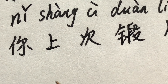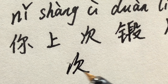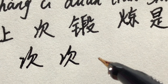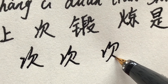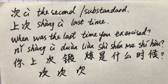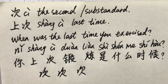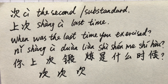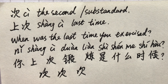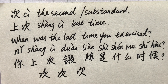次, incursive. 次, the second, substandard. 上次, last time. When was the last time you exercised? 你上次锻炼是什么时候?